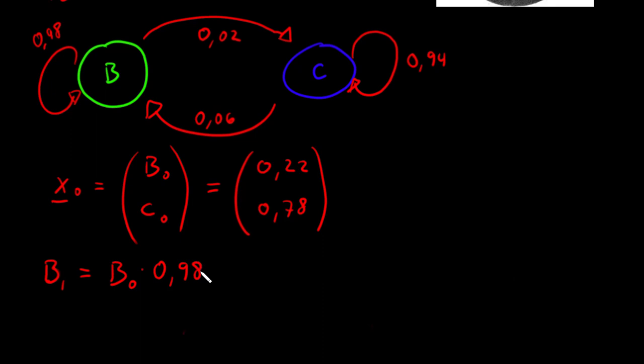But there was a net inflow from the capital as well. So that was the population in the capital at year 0, times the 6% movement from that city.